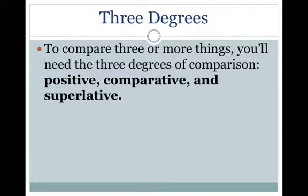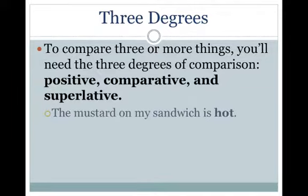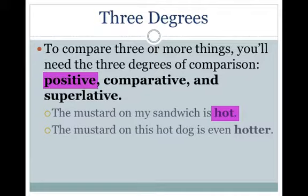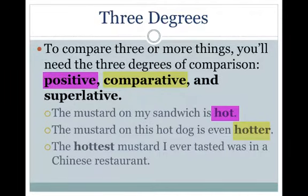For example, suppose you want to compare the hotness of three mustards — one on a sandwich, one on a hot dog, and one on an egg roll. The mustard on my sandwich is hot — that's the positive degree. The mustard on this hot dog is even hotter — that's the comparative degree. The hottest mustard I ever tasted was in a Chinese restaurant — that's the superlative degree.